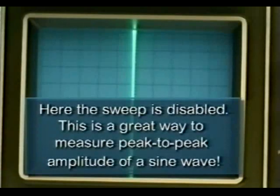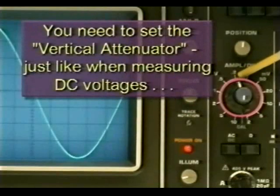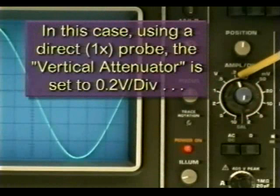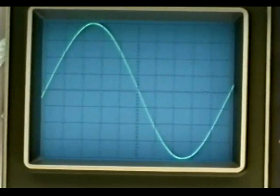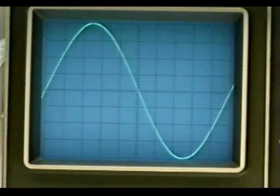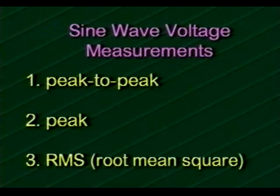We're switching to progressively slower and slower sweep speeds. Here the sweep is disabled, which is a great way to measure peak-to-peak amplitude of a sine wave. To measure the voltage, you need to set the vertical attenuator just like when measuring DC voltages. In this case, using a 1x probe, the vertical attenuator is set to 0.2 volts per division. If using a 10x probe rather than a 1x probe, you'd multiply the vertical attenuator setting by 10, making each division worth 2 volts per division rather than 0.2.